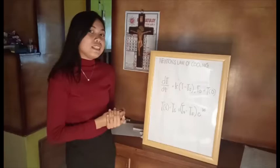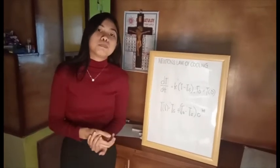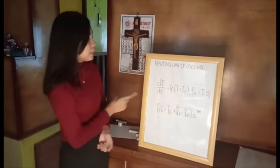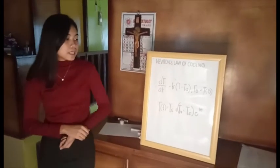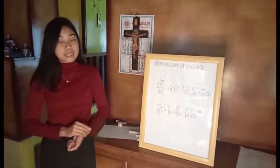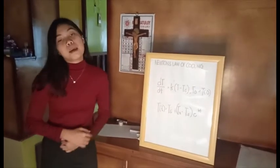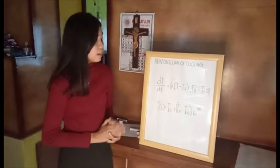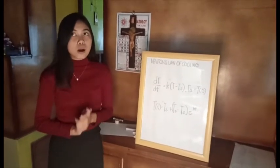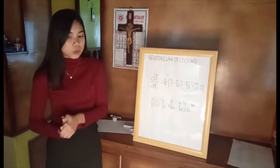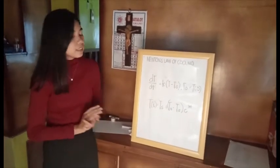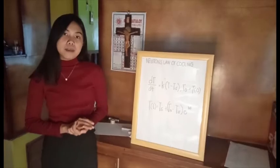The particular solution of the initial value problem at time T is given by T(t) is equal to T sub s plus (T sub zero minus T sub s) times E raised to kT, where T sub s is the temperature of the surrounding environment, T sub zero is the initial temperature of the object at T equals zero, k is the proportionality constant, and T(t) is the temperature of the object at time T.